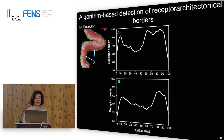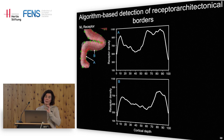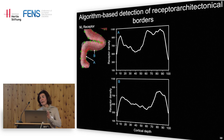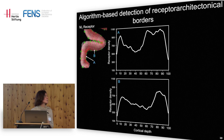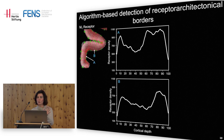For cell-body stained sections, we transform the histological sections into grey images where grey values code for the proportion of cell bodies in the measuring field versus the proportion of neuropil — the tissue where dendrites are located and synapses are found. If you compare profiles from two different sites you may find that they're different, so you think you're in two different areas.